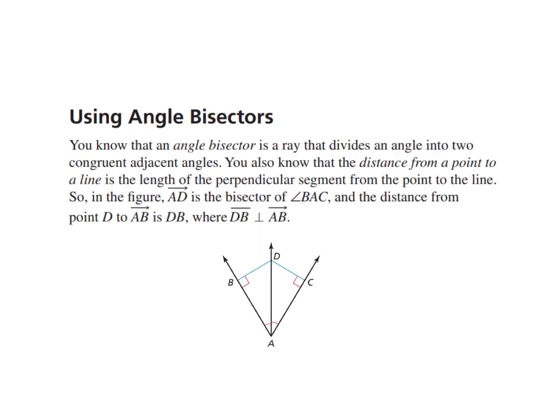Today we're going to start by looking at angle bisectors. An angle bisector is a ray that divides any angle into two congruent and adjacent angles — two angles that are the same measure but are next to one another. We also know that the distance from a point to a line is the length of the perpendicular segment from the point to the line. Looking at the figure, ray AD is bisecting angle BAC, so it creates two equal angles.